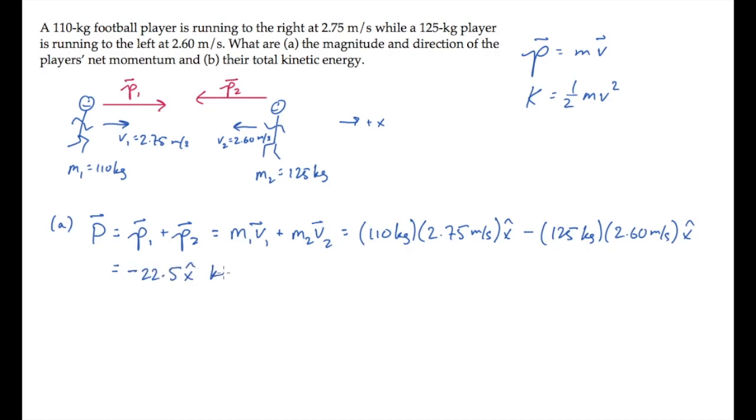When we calculate this, we get minus 22.5 x-hat kilogram meter per second. So the magnitude is 22.5 kilogram meter per second, and the direction is in the negative x-hat direction, which is to the left.